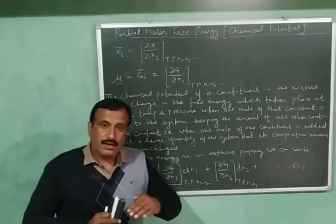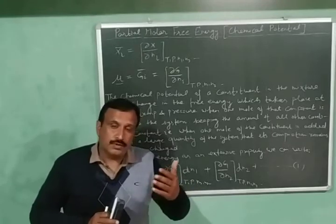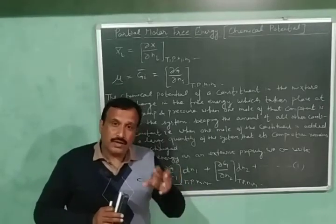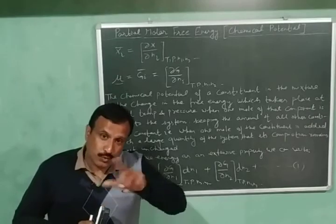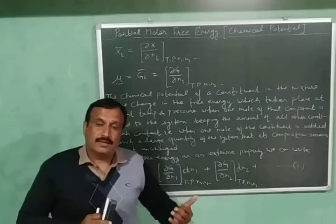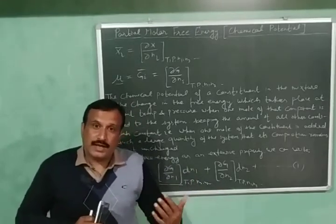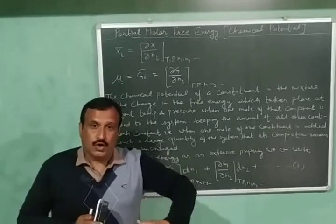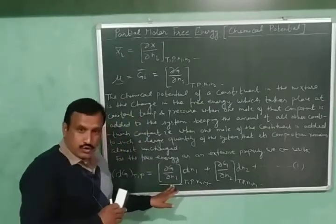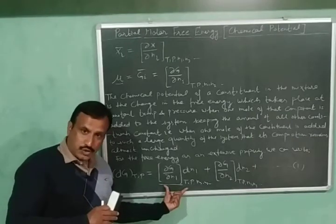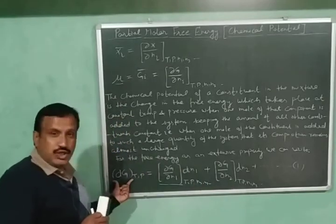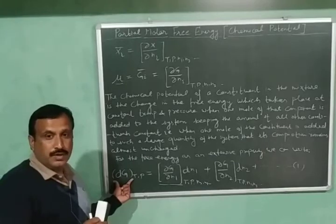In my previous video I forgot to mention the meaning of the word 'partial.' It means that every component or constituent contributes towards the total change in the extensive property — just like the partial pressure of each gas contributes towards the total pressure of a gaseous mixture. So every quantity is contributing: the first component contributes one part and the second component another part towards the total change in free energy.